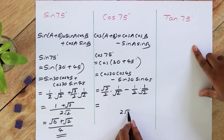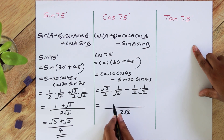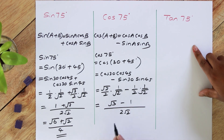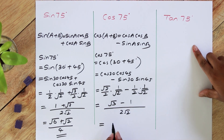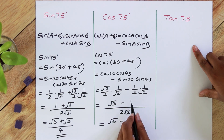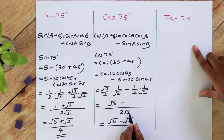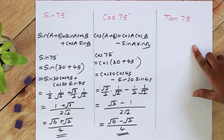So the denominator is 2 root 2 and above it will be root 3 minus 1. Rationalizing the denominator by multiplying up and down by root 2: root 3 times root 2 is root 6, minus root 2 times 1 is root 2, over root 2 times root 2 is 2, times 2 gives 4. So cos 75 equals (root 6 minus root 2) over 4.